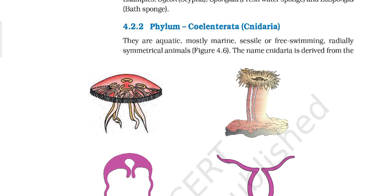Most of them are aquatic, and most of them are marine — that is, saltwater — but a few are present in freshwater. For example, Hydra, which is a freshwater organism. They are sessile and free-swimming. Sessile means the animal is attached directly by its base without a stalk.